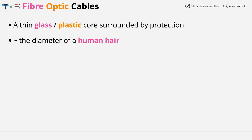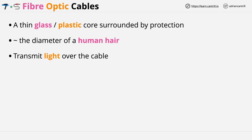The cable that you can see and touch is that core surrounded by a lot of protection. If you just handled the core on its own, it would be pretty susceptible to damage. Now fibre optic cables, as the name suggests, transmit light over the glass or plastic medium. So light over glass or plastic versus electrical signals over copper.